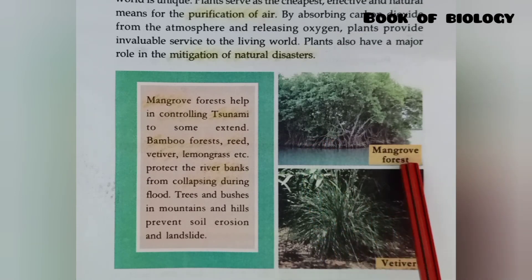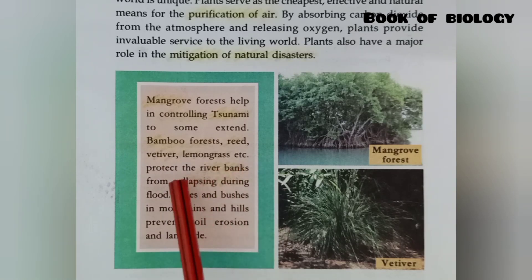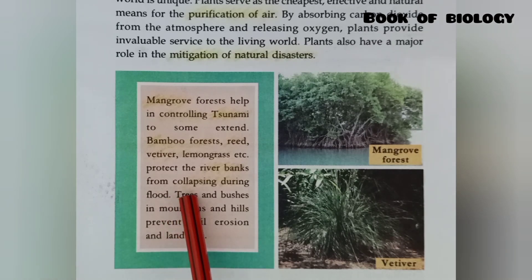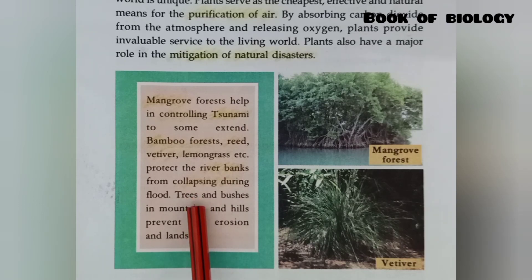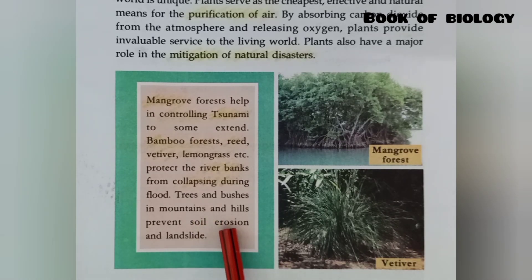Bamboo forest, reed, vetiver, and lemongrass protect river banks from collapsing during floods. Trees and bushes in mountains and hills prevent soil erosion and landslides. So all these plants play a vital role in protecting the environment from natural calamities.